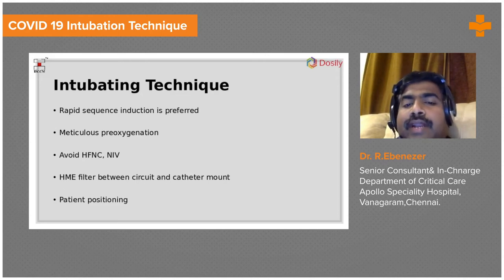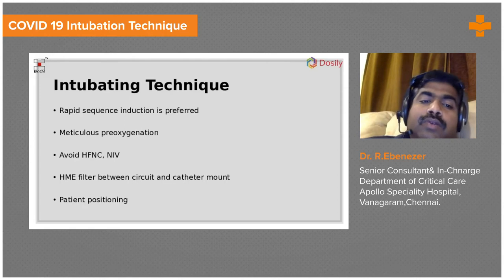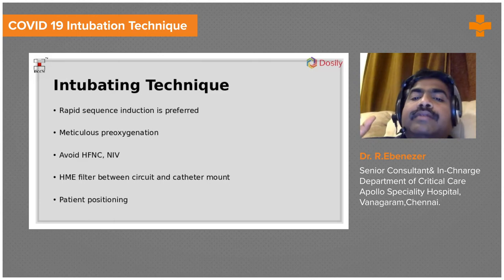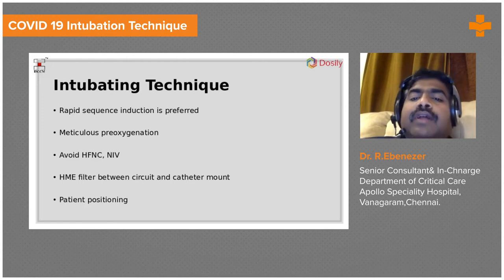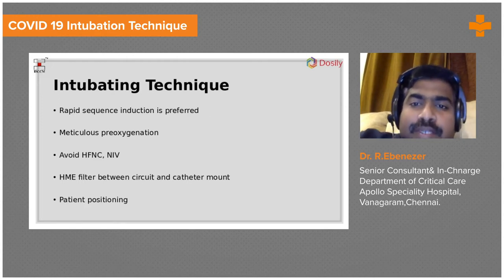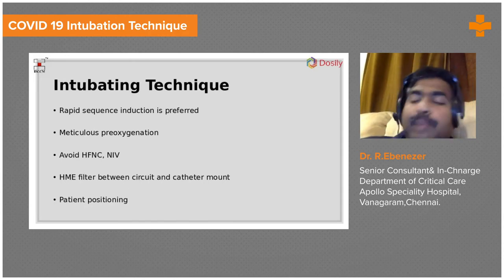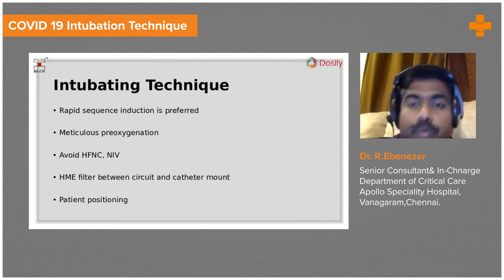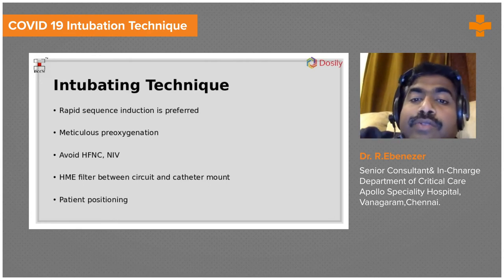Avoid HFNC and NIV because they generate a lot of aerosols and are dangerous. Previously, when intubating some patients in ICUs, if a patient was on NIV, they would give the induction drug and paralytics while the patient was still on NIV, then intubate once paralyzed. That is not advisable in COVID-19 because it can generate aerosols. When the patient is on HFNC or NIV, there is no point standing in the room at that time.